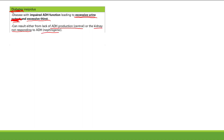Diabetes insipidus can be a problem either due to lack of ADH production or from the kidney not responding to ADH. Lack of ADH production is called central diabetes insipidus. When the kidney doesn't respond to ADH — you're making ADH but the kidney ignores it — that's called nephrogenic diabetes insipidus. Central DI results from damage to the hypothalamus or posterior pituitary, where ADH is made and stored.